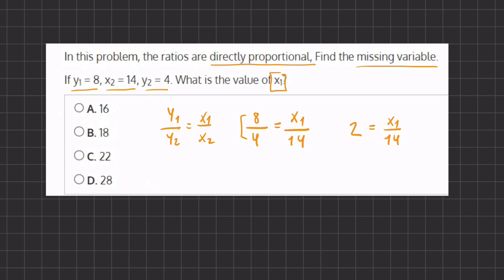So we are going to isolate it by multiplying 14 on both sides and now we have 14 times 2 which gives us 28 equals x1. So the value of x1 is going to be 28 and that's going to be our final answer which corresponds with D.